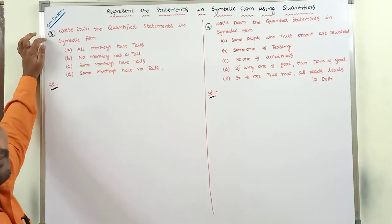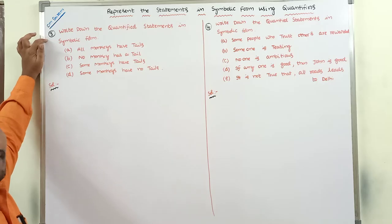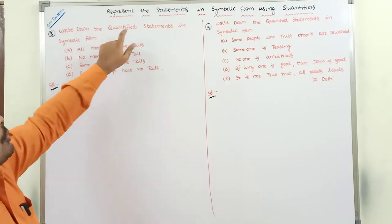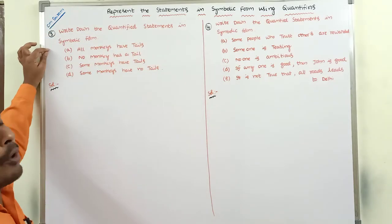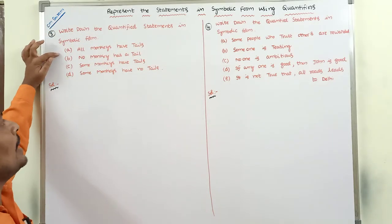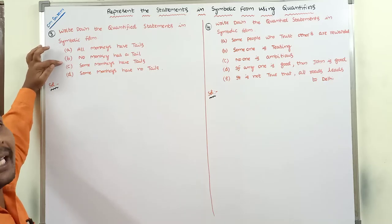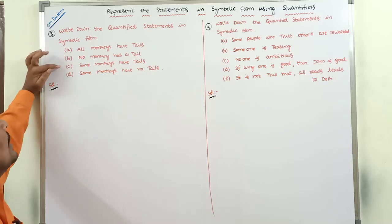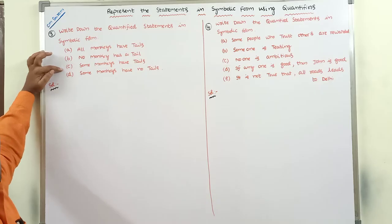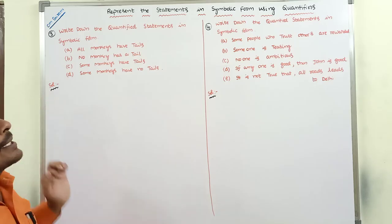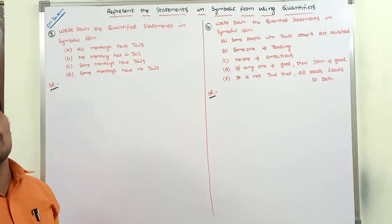This is the third problem. In the previous video, two problems are completed — please refer that one. Write down the quantified statements in symbolic form. First statement: all monkeys have ties. Second statement: no monkey has a tie. Third statement: some monkeys have ties. And fourth statement: some monkeys have no ties.